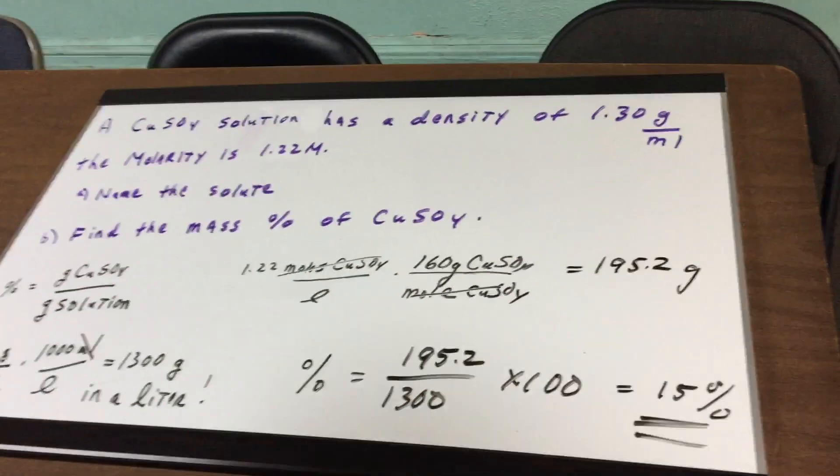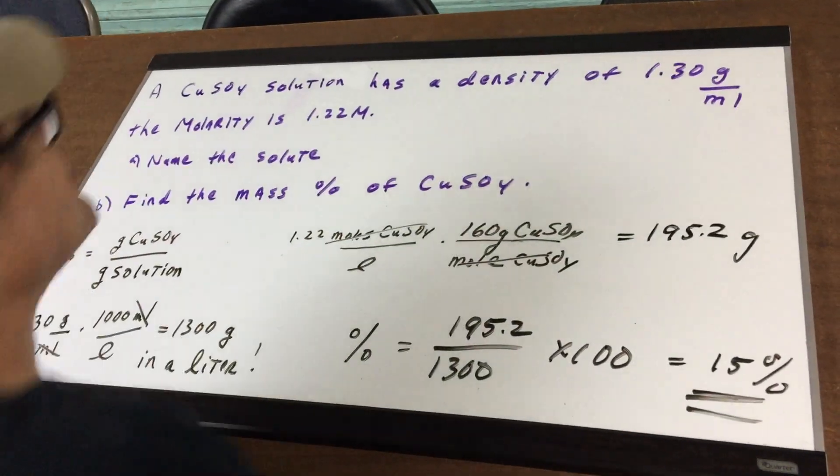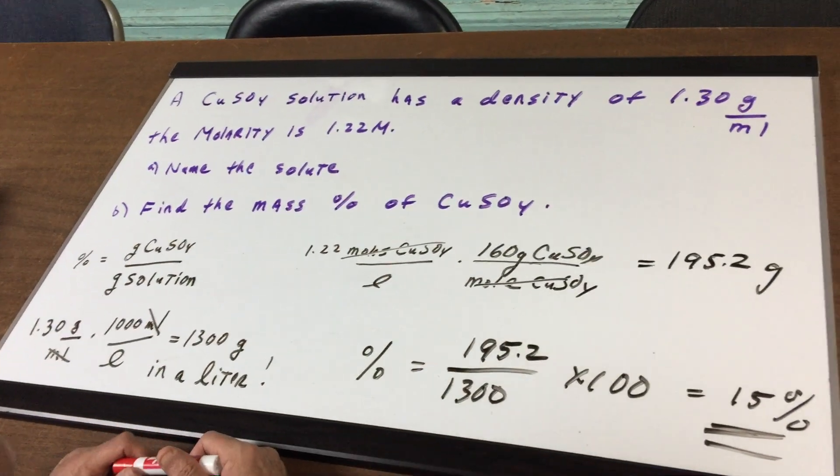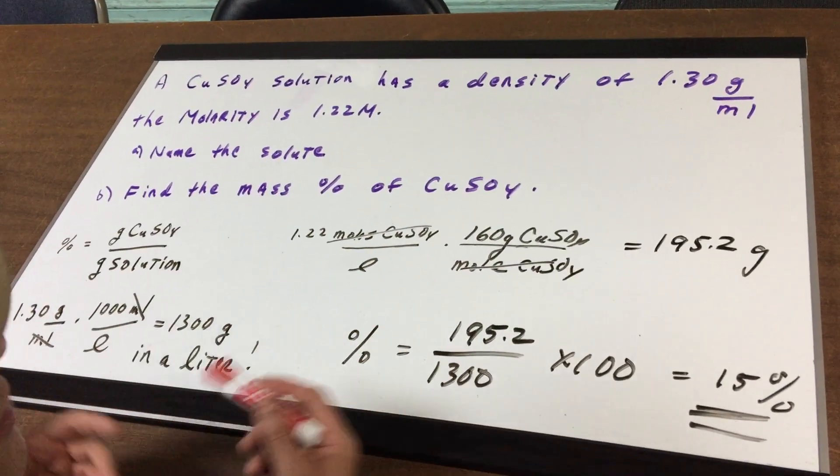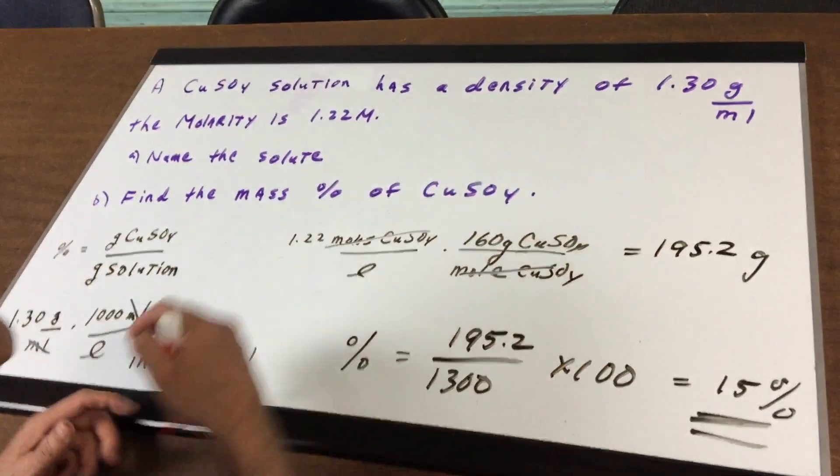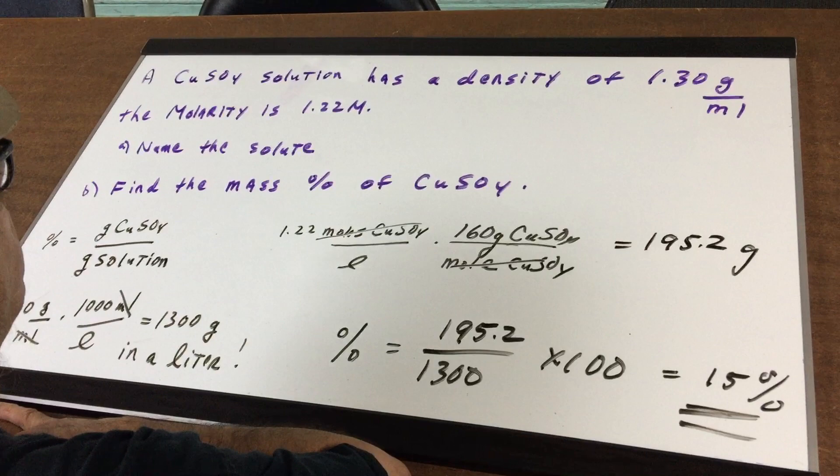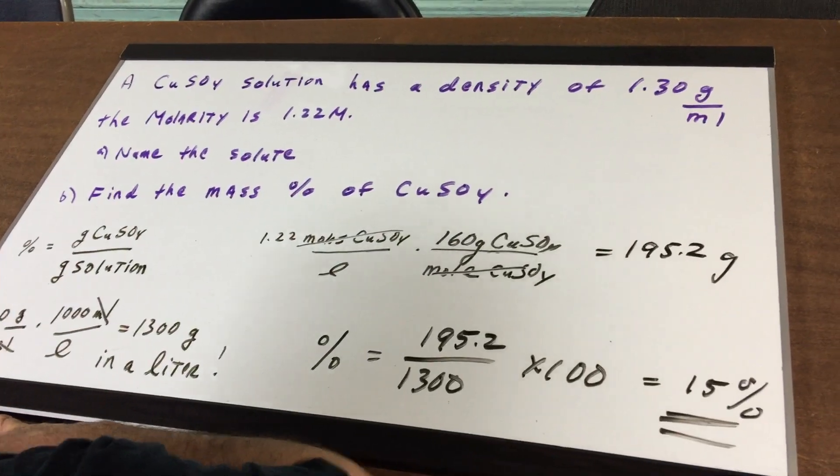What I want to do is look at a CuSO4 solution that has a density of 1.30 grams per milliliter, or I could have wrote it as grams per centimeters cubed. The molarity is 1.22 molar, and first I want to name the solute.